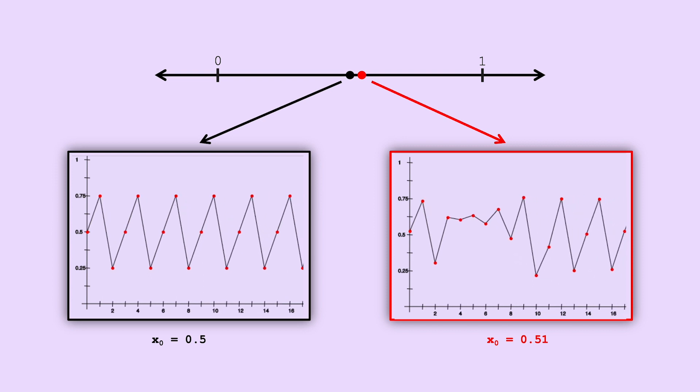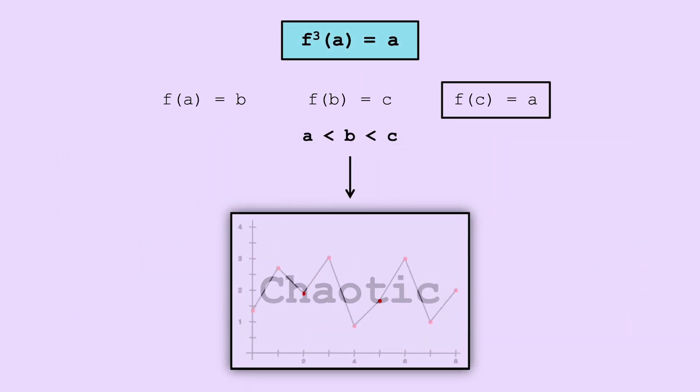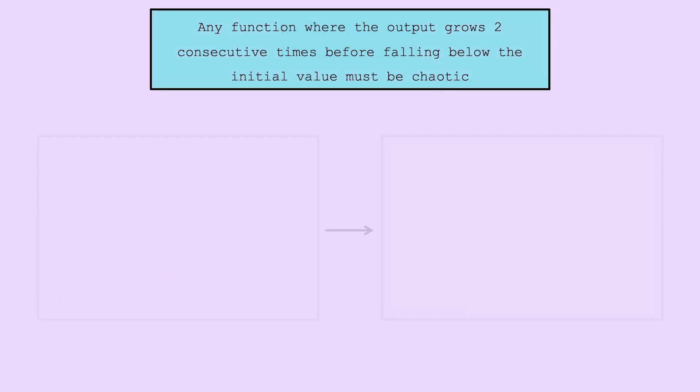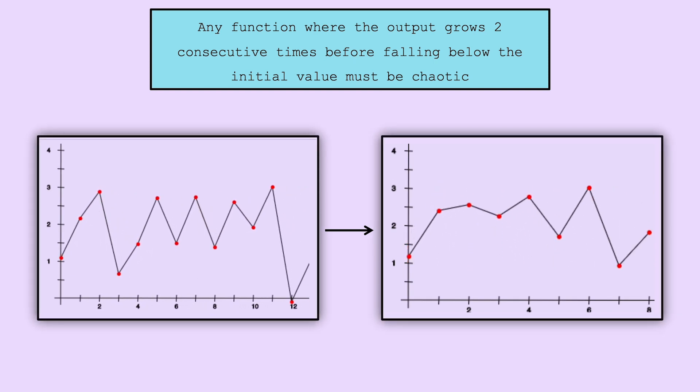But you don't even need to see something with period 3 to know f is chaotic in this way. Remember when we said f of c is equal to a? The proof above works as long as f of c is less than or equal to a. So any function where the output grows two consecutive times before falling before the initial value must be chaotic.